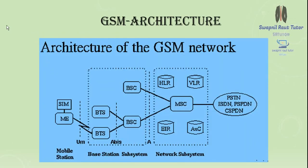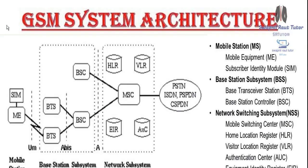The GSM architecture contains three parts: the Mobile Station (MS), the Base Station Subsystem (BSS), and the Network Subsystem. MS consists of ME (Mobile Equipment) and SIM (Subscriber Identity Module). The Base Station Subsystem consists of BTS (Base Transceiver Station) and BSC (Base Station Controller). The Network Subsystem consists of MSC (Mobile Switching Center), HLR (Home Location Register), VLR (Visitor Location Register), AUC (Authentication Center), and EIR (Equipment Identity Register).